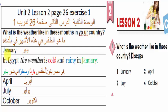January: In Egypt, the weather is cold and rainy in January. April. July.